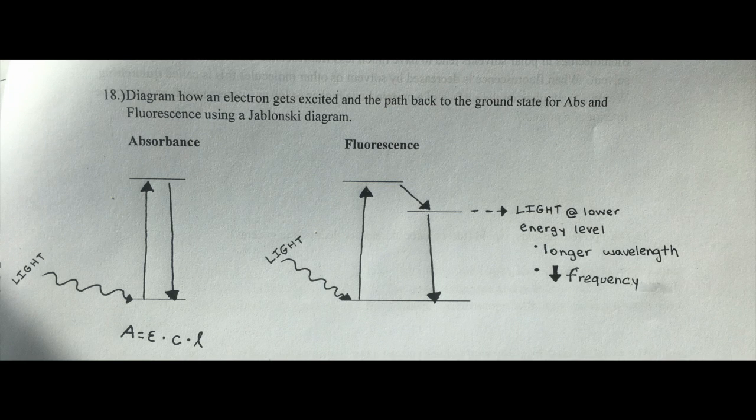Below I've showed a Jablonski diagram that can be used to compare absorbance and fluorescence. For absorbance, when light enters a sample, it has the ability to excite electrons. This excitation does not last forever, though, and as the electron returns to its original ground state, the energy is released as heat.